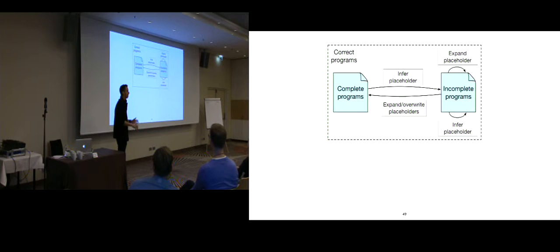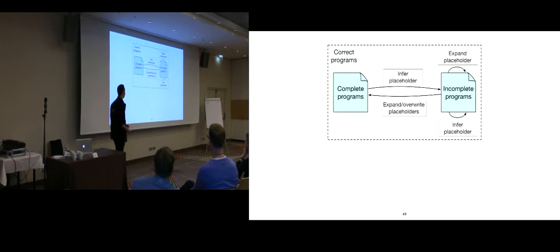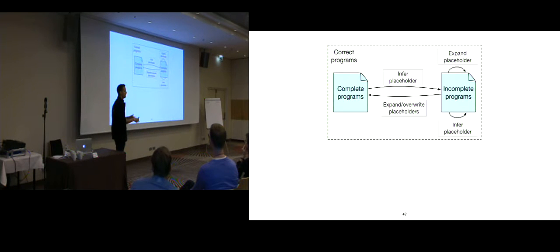Now our diagram looks like this: we still have complete and incomplete programs. Using placeholder inference, you can move from a complete program to an incomplete one by adding placeholders and continuing code completion from there. You can also do that for programs that already have placeholders but where you want to add placeholders in a different position.